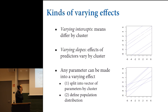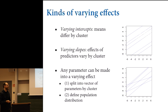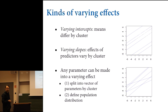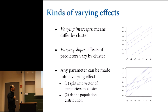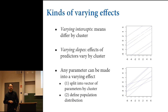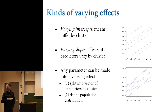That leads us to varying slopes — cases where the change in the outcome for a given change in the predictor also varies across clusters. Think of a school database: horizontal axis is household income of students, vertical axis is test scores, and each line is the regression line for a school. In some schools, household income has a big effect on test scores; in others it doesn't.